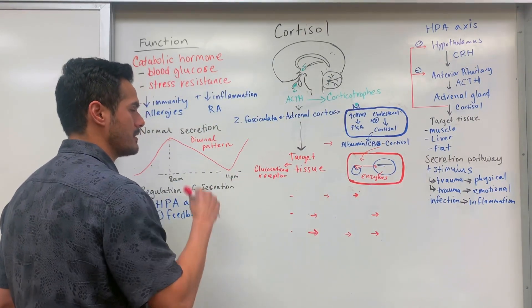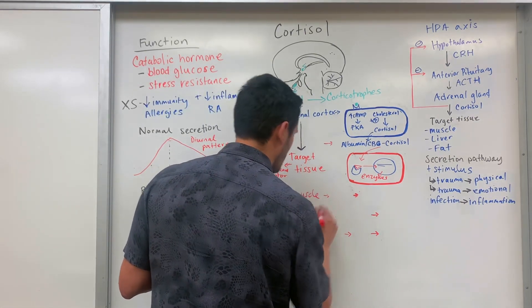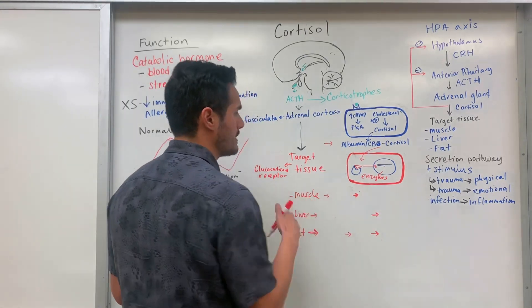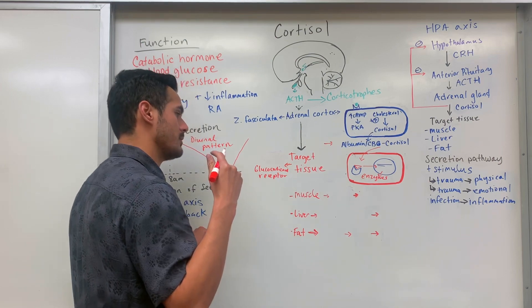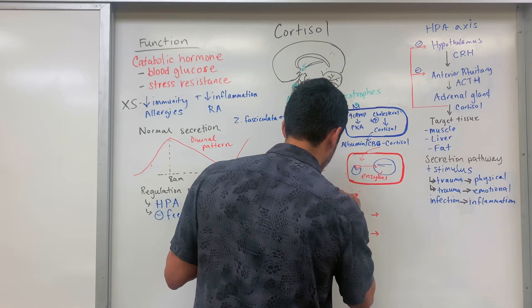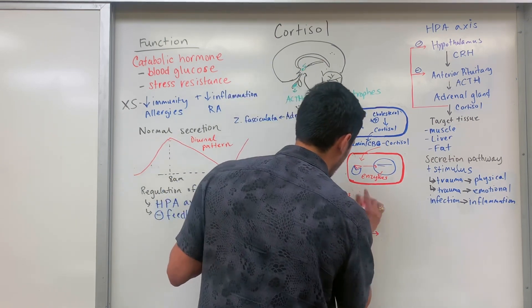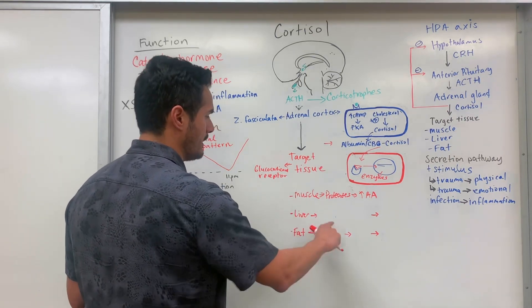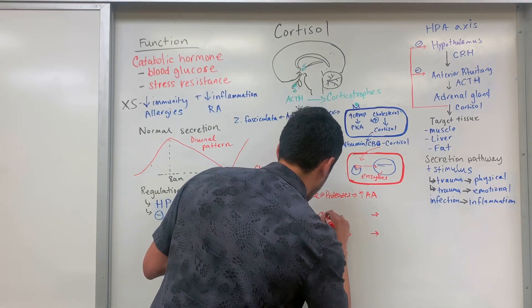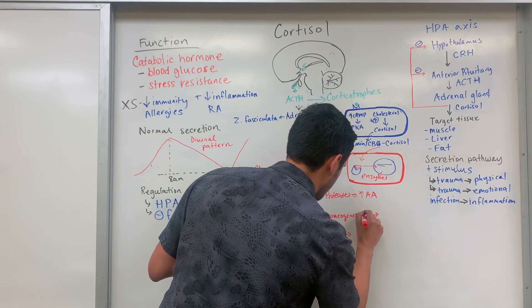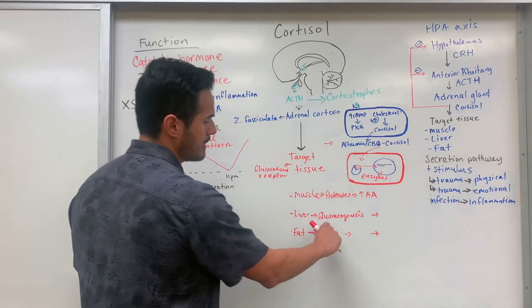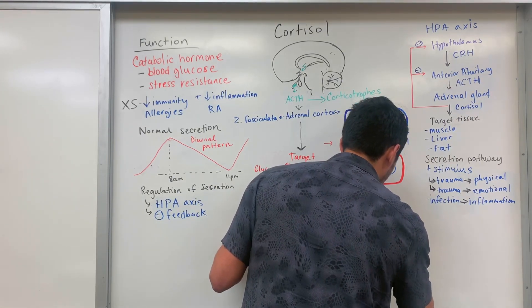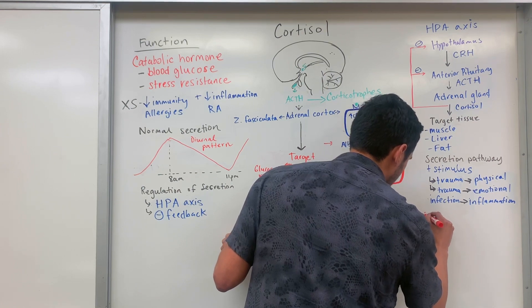So what are some of the target tissue types? You have the muscle, the liver, and fat. In muscle tissue, the specific enzymes synthesized include proteases, which are produced to increase amino acid levels. Once those amino acids are available and we get to the liver, gluconeogenesis occurs. The enzymes synthesized in the liver will help make more glucose, increasing blood glucose levels to feed the brain — because the brain is a glucose hog.